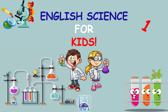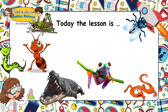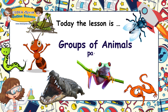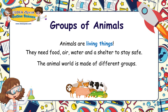English science for kids, level one. Today the lesson is: Groups of Animals, Part Two. Animals are living things. They need food, air, water, and a shelter to stay safe. The animal world is made of different groups.